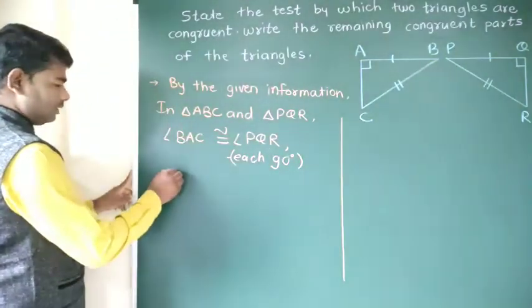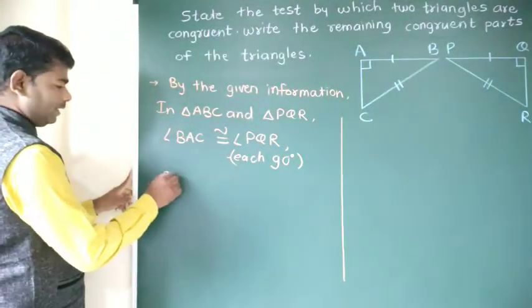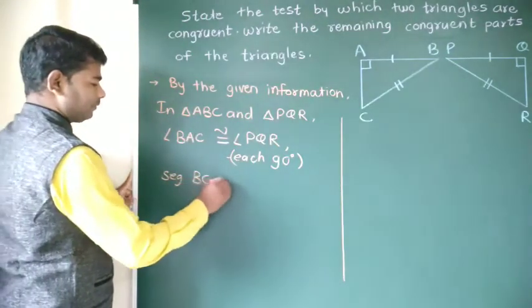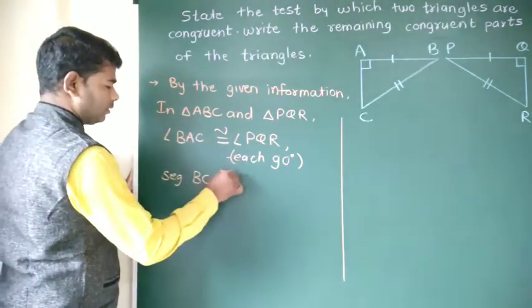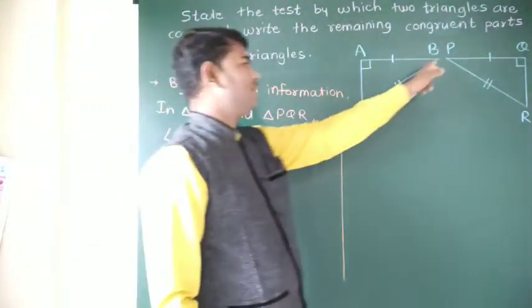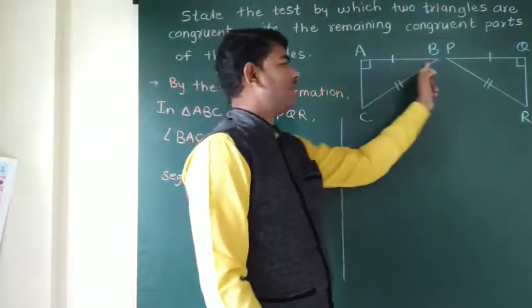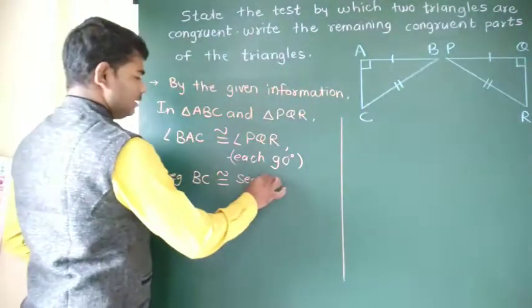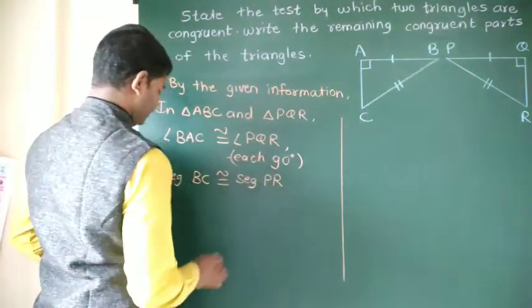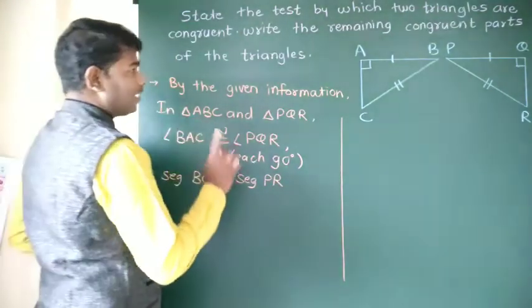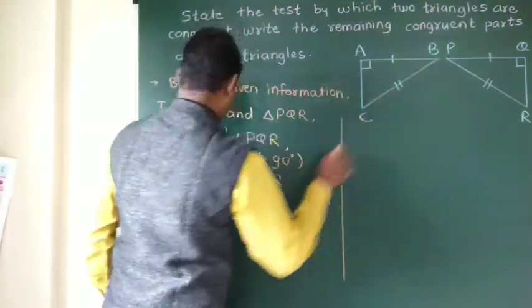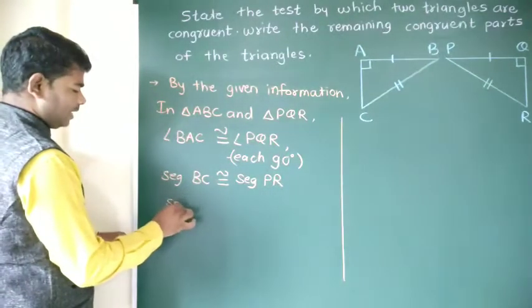then segment BC is equal to segment PR, and the second component is segment AB equal to segment HBA.